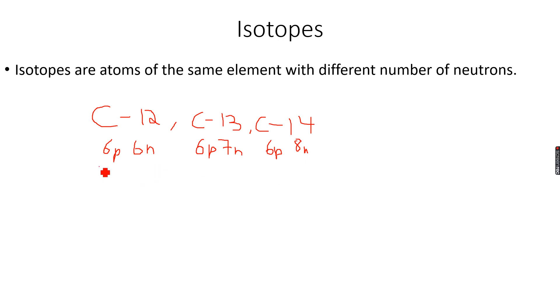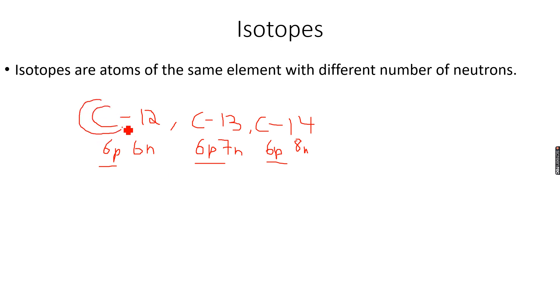You can see that the proton number remains the same across all carbon isotopes, and that is why the atomic number remains the same — meaning they are all the same element.